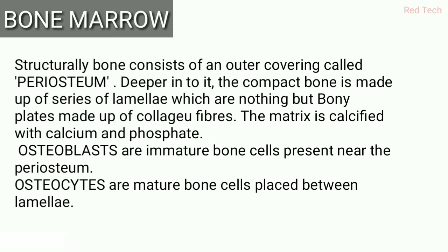Osteoblasts are immature bone cells present near the periosteum, which is the outer covering of the bone. Osteocytes are mature bone cells present between the lamellae. You must remember both terms: osteoblasts are the immature bone cells near the periosteum, and osteocytes are the mature bone cells placed between the lamellae.